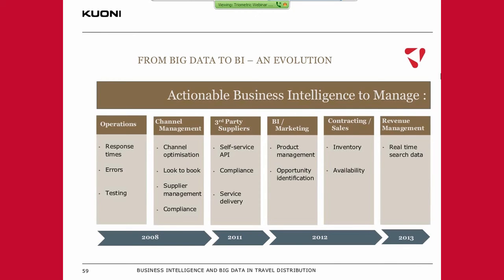The next phase of this development was us getting visibility of our outbound supplier requests. What became very apparent is that whilst we had this plethora of information and could put our finger on any individual request, our supply chain weren't there yet. We had another piece of work that allowed us to see, within the Triometric database, our supply chain's response times, their failure to respond within our time-out values. We also got all the business intelligence about the pricing, inventory, bookings, and content from them as well.